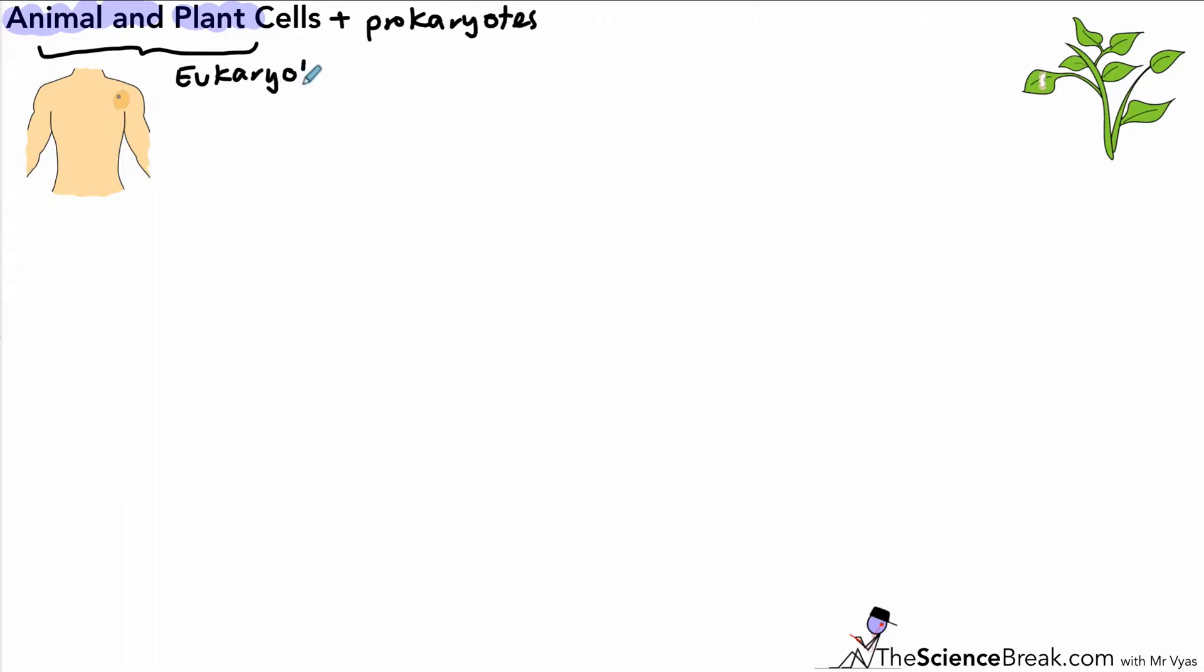Animal and plant cells we can also refer to as eukaryotes. A simple way to know the difference is that eukaryotes have a nucleus and prokaryotes or bacteria don't. So let's pluck out a cell from our person on the left and take a cell from the plant as well.